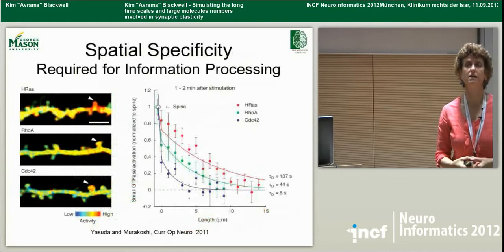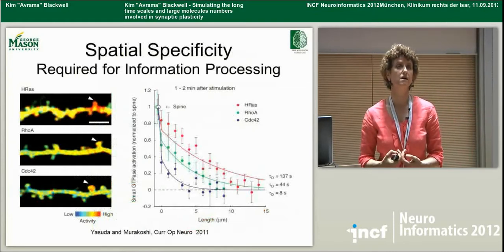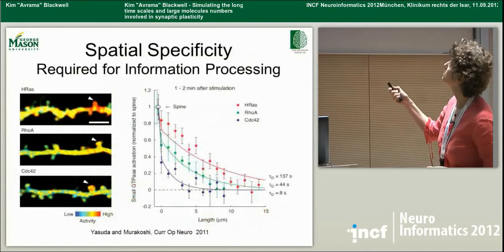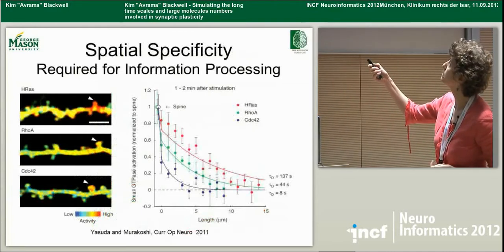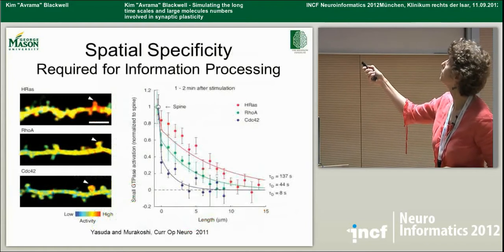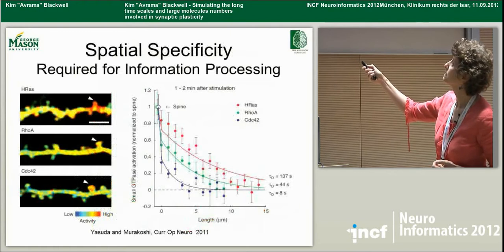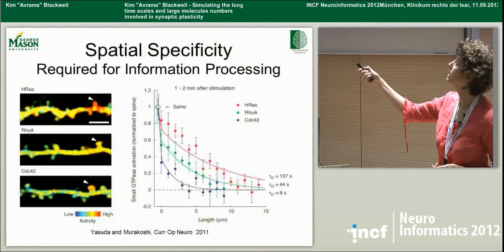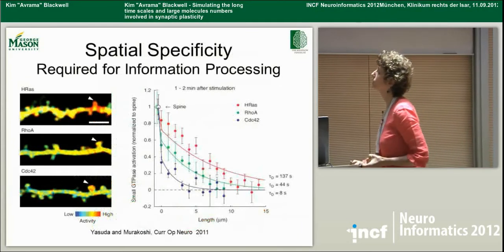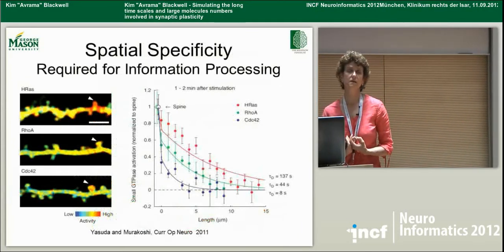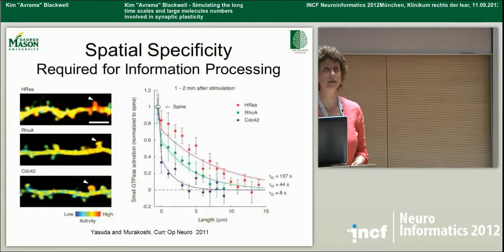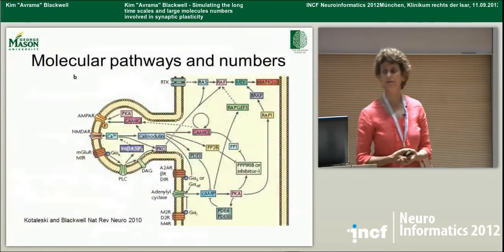We also see spatial specificity in various molecules, and that varies. With calcium, it's restricted to the stimulated spine. With different RAS members, you get different degrees of specificity: CDC42 basically only extends for a few microns, whereas RhoA and H-RAS extend for a further distance. So we need to capture these different time scales and spatial scales in order to understand synaptic plasticity.